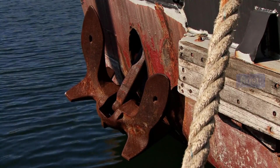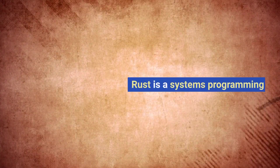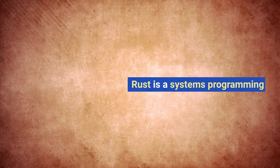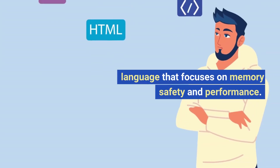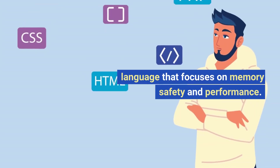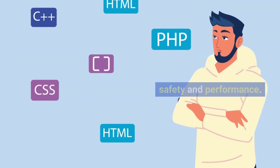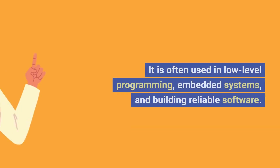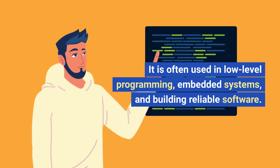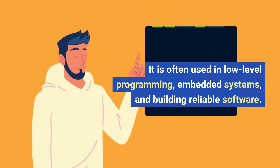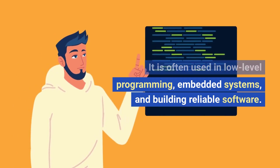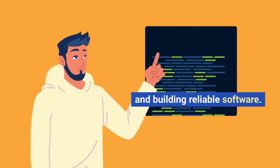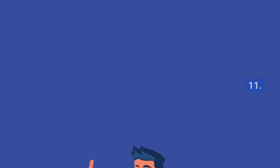Tenth, Rust: Rust is a systems programming language that focuses on memory safety and performance. It is often used in low-level programming, embedded systems, and building reliable software.